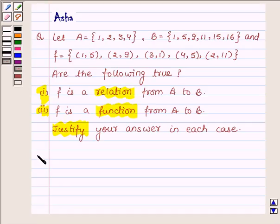So let us start with the solution and here we are given two sets A and B having elements 1, 2, 3, 4 and 1, 5, 9